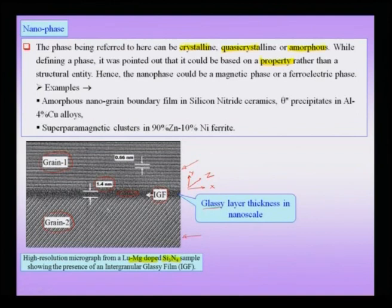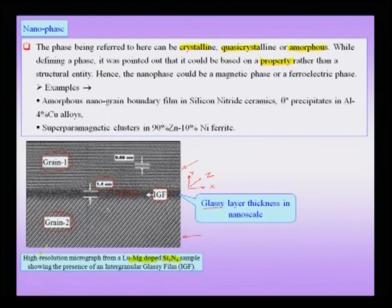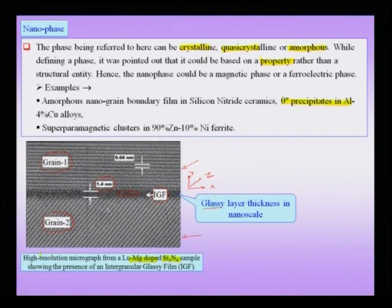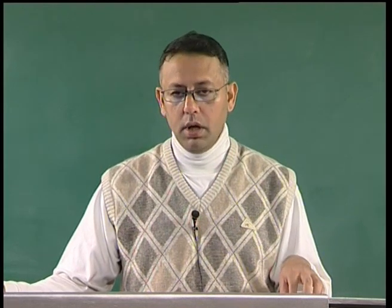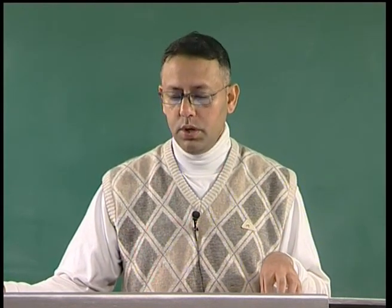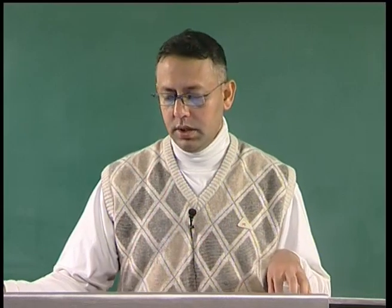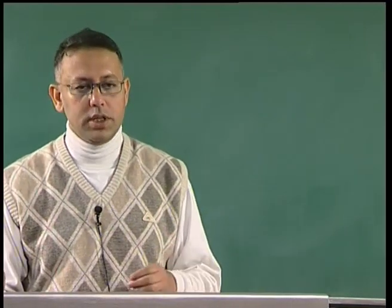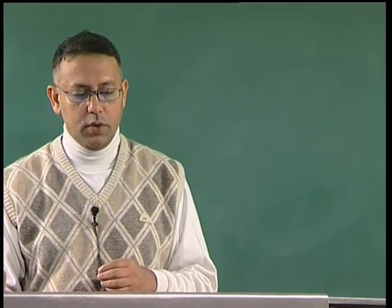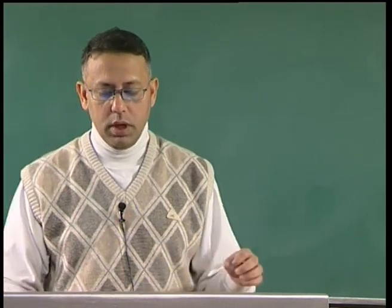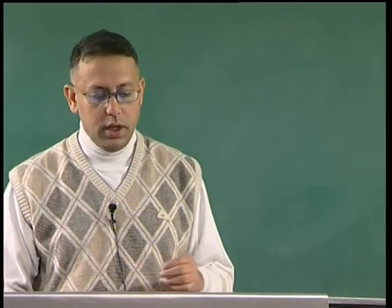There are other examples, like the theta double prime precipitate in an aluminum-copper 4 percent copper alloy which has been aged. You take an aluminum 4 percent copper alloy, solutionize it at high temperature, quench it to retain a supersaturated solid solution, and when you age this alloy you initially get a GP zone — a nano structure, which is a copper-rich zone in an aluminum-copper matrix. Then you get the theta double prime and theta prime states, which in the initial stages of their growth are actually in the nano scale.